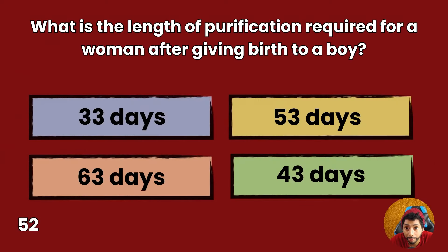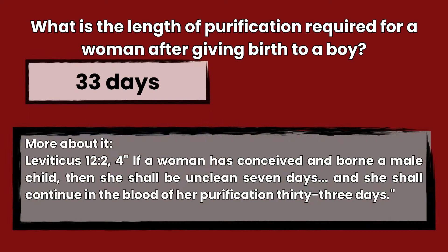Question 52: What is the length of purification required for a woman after giving birth to a boy? 33 days, 53 days, 63 days, or 43 days? Answer: 33 days. Leviticus 12:2 — If a woman has conceived and born a male child, then she shall be unclean seven days, and she shall continue in the blood of her purification 33 days.